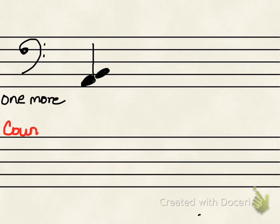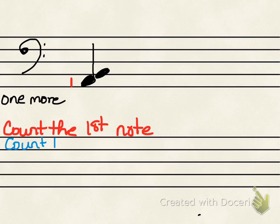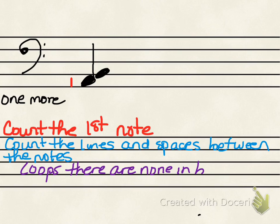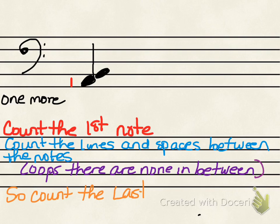Let's look at one more. Count the first note — one. Count the lines and spaces in between. Notice that we don't have any lines and spaces in between the first note and the second note. So we count the last note, and in this case, it will be two. So our interval will be two.